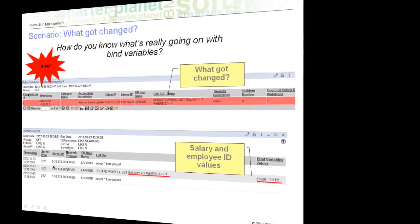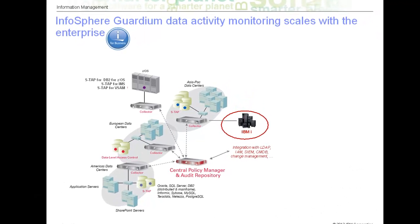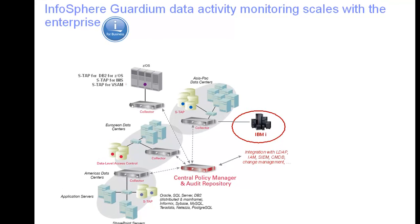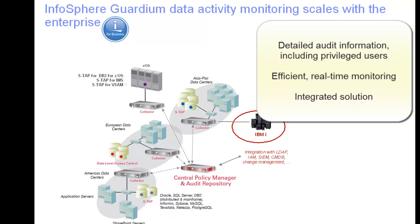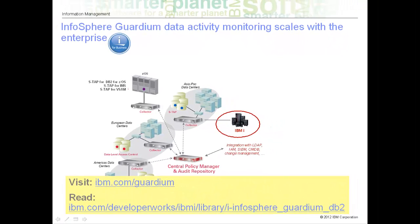IBM i has more than 20 years of exceptional security and business resilience. Now, with this enhanced auditing capability provided by Infosphere Guardian, the ability to monitor and protect your critical IBM i data assets is more detailed, more efficient, and integrated with a data security and compliance platform that can scale with your enterprise. Read the article in Developer Works to learn more about this audit solution for IBM i, and visit IBM.com/Guardian to learn more about the capabilities of the Infosphere Guardian data security and compliance platform.